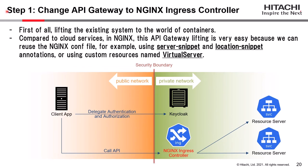Step 1 is to change the API gateway to the NGINX Ingress Controller. First, lift the existing traditional API systems to the world of containers. Compared to cloud services, this API gateway migration is very easy because we can reuse the NGINX configuration, for example using server snippet and location snippet annotations or custom resources named Virtual Server. The NGINX Ingress Controller plays the role of the API gateway: validating JWT, verifying client certificates, and proxying API calls to the resource server services.